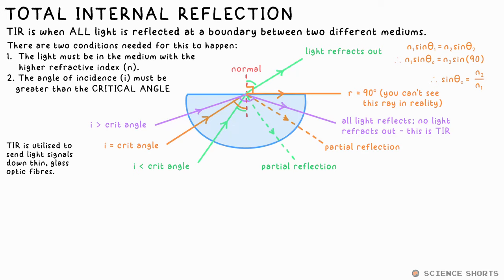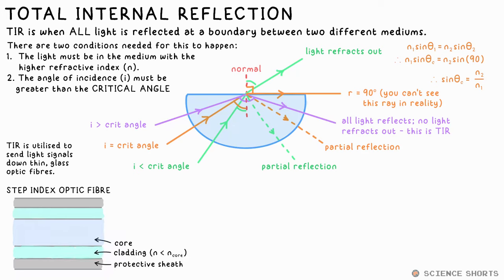This incidentally is how optic fibers or fiber optics work. The basic optic fiber is a glass core surrounded by a protective sheath. The issue is that this will have a higher refractive index than the core, so TIR would not happen if it were not for the extra layer called the cladding that is in between them. It has a lower refractive index than the core, so TIR can occur.